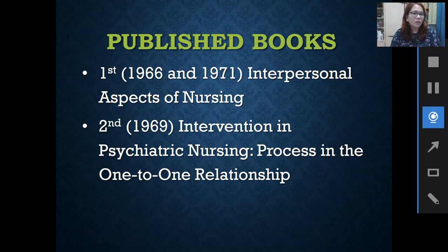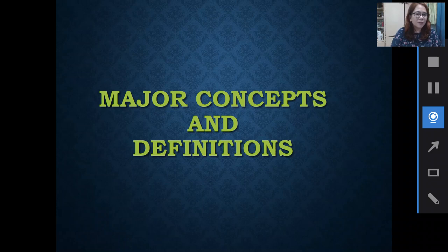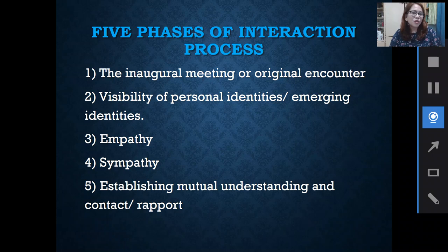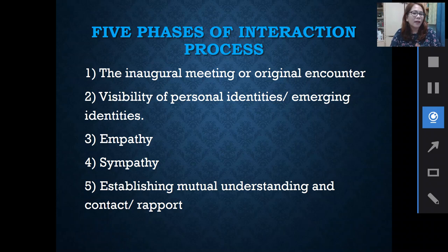Let us now move on to the major concepts and definitions of Travelbee's theory. She identified five phases of the interaction process, which are also the concepts used in her study. The first is the inaugural meeting, also known as original encounter. The second is the visibility of personal identities, or emerging identities. The third is empathy. The fourth is sympathy. And the fifth is establishing mutual understanding and contact, or rapport. Each of these phases will be discussed in the next slides.